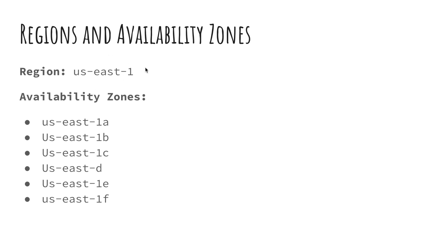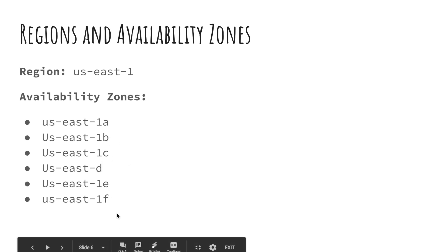Let's look at how the naming syntax works for regions and availability zones. A region is named like this: US-East-1. And inside of this region there are multiple availability zones: US-East-1A, US-East-1B, C, D, E, and F.